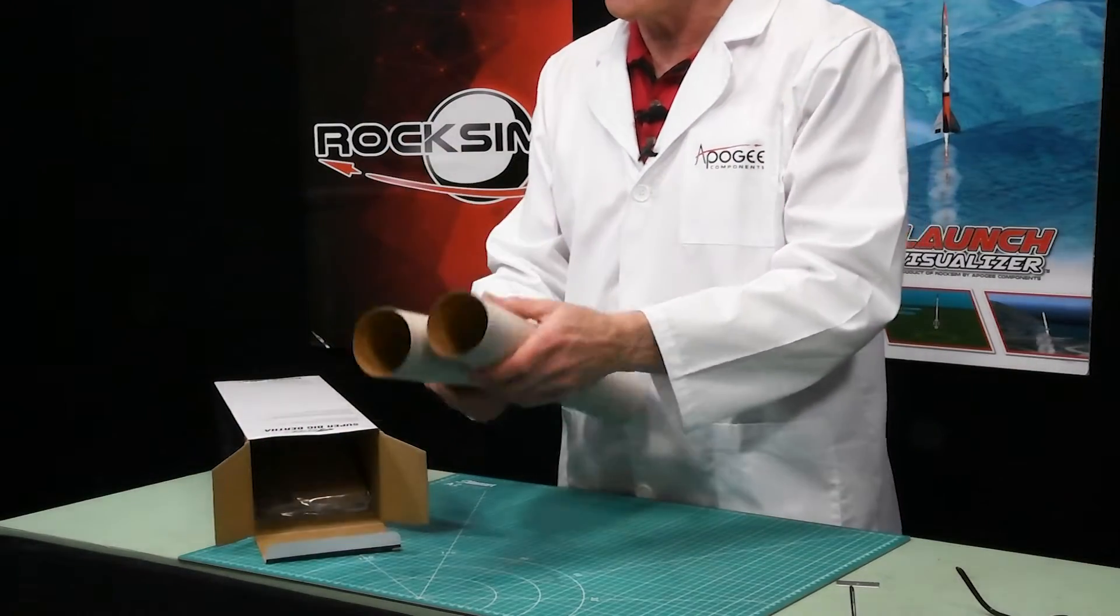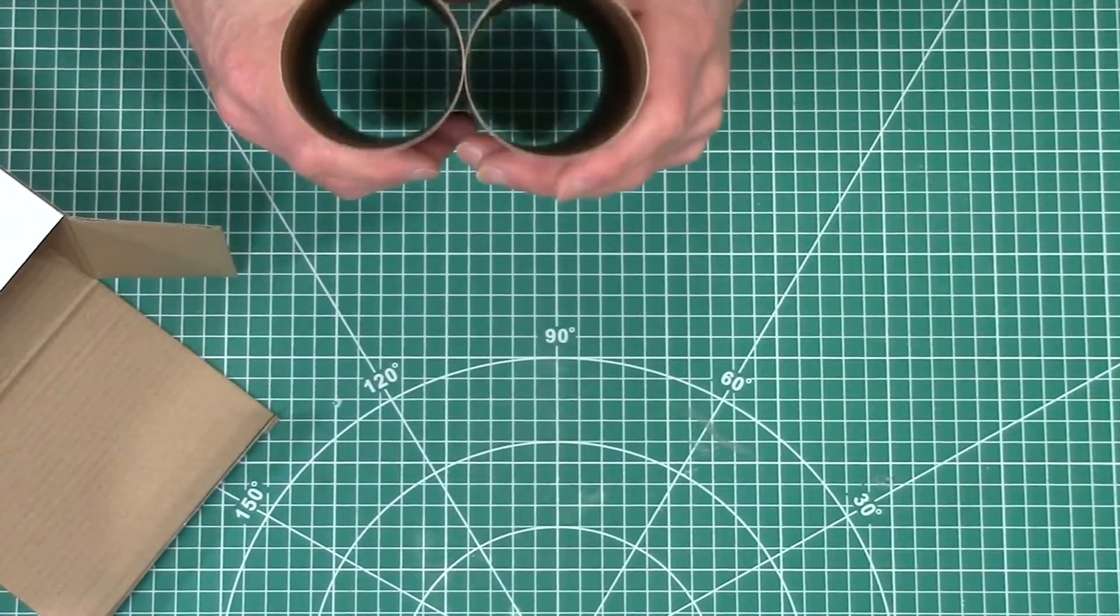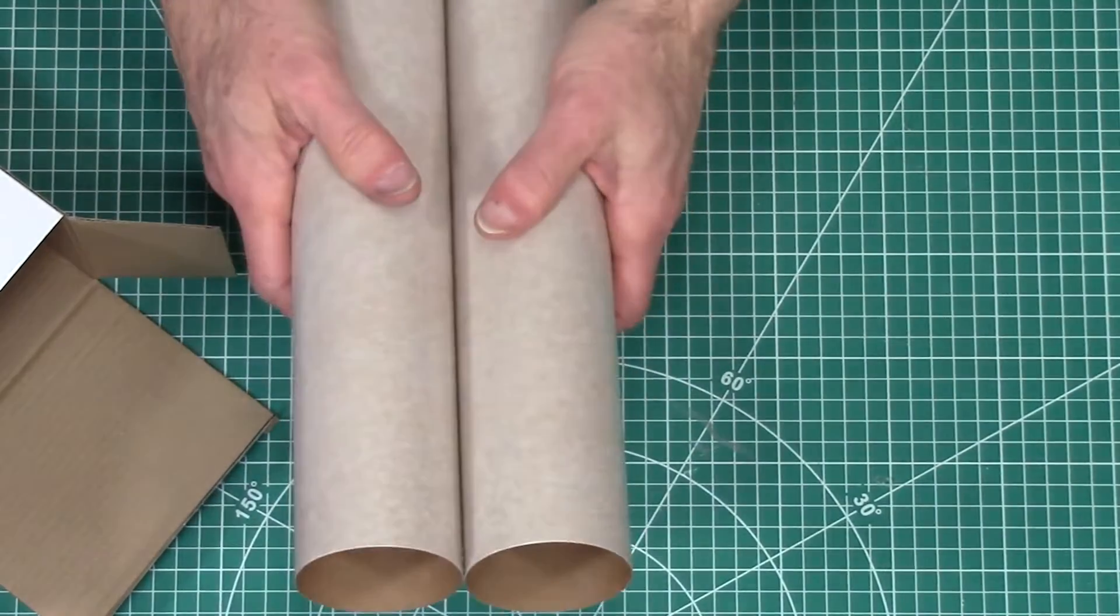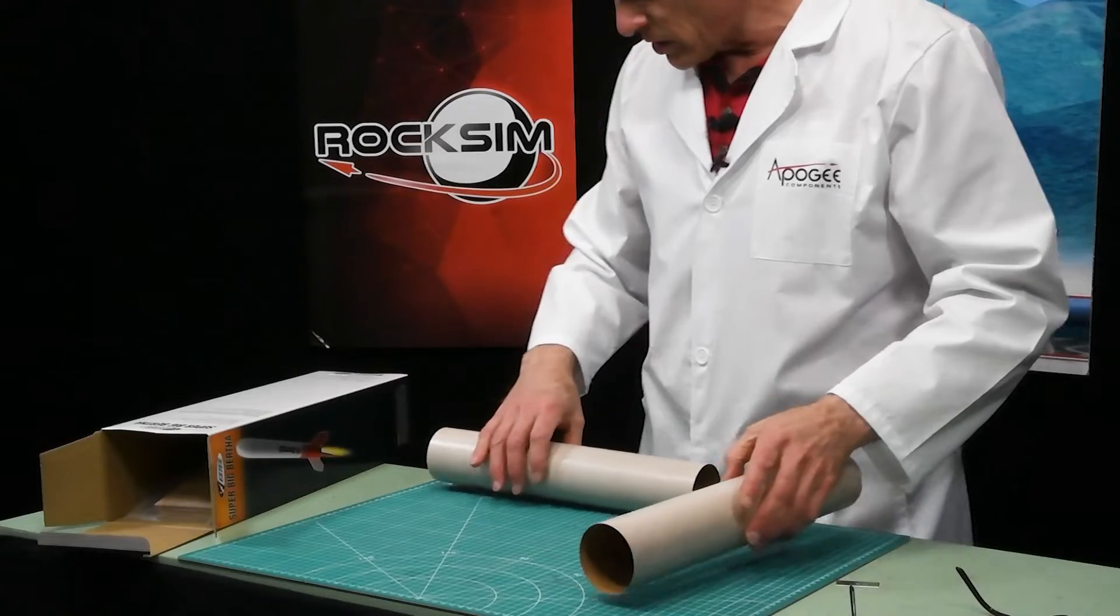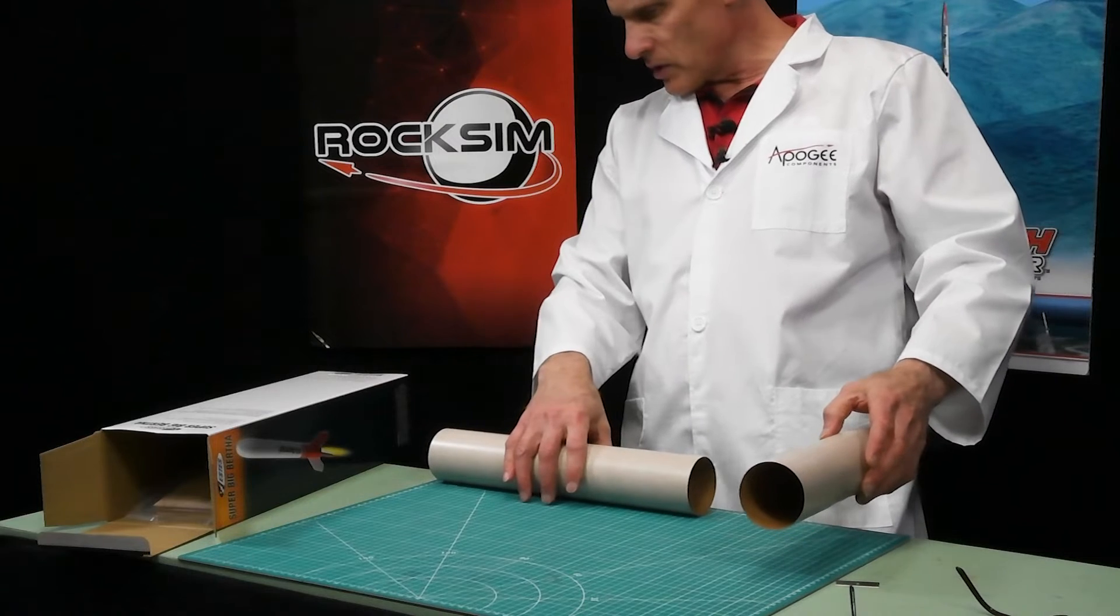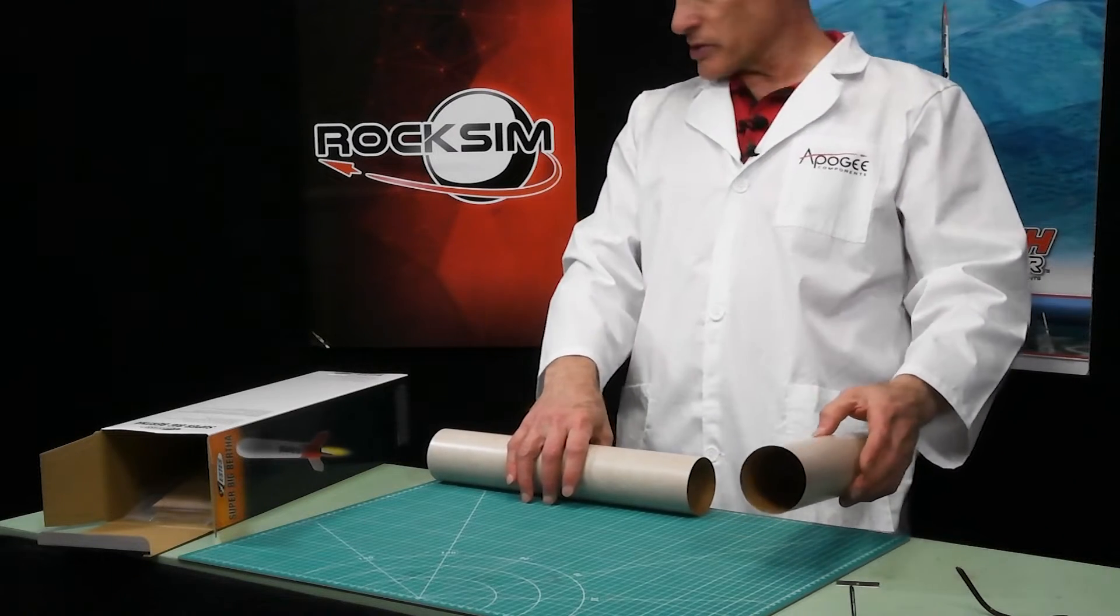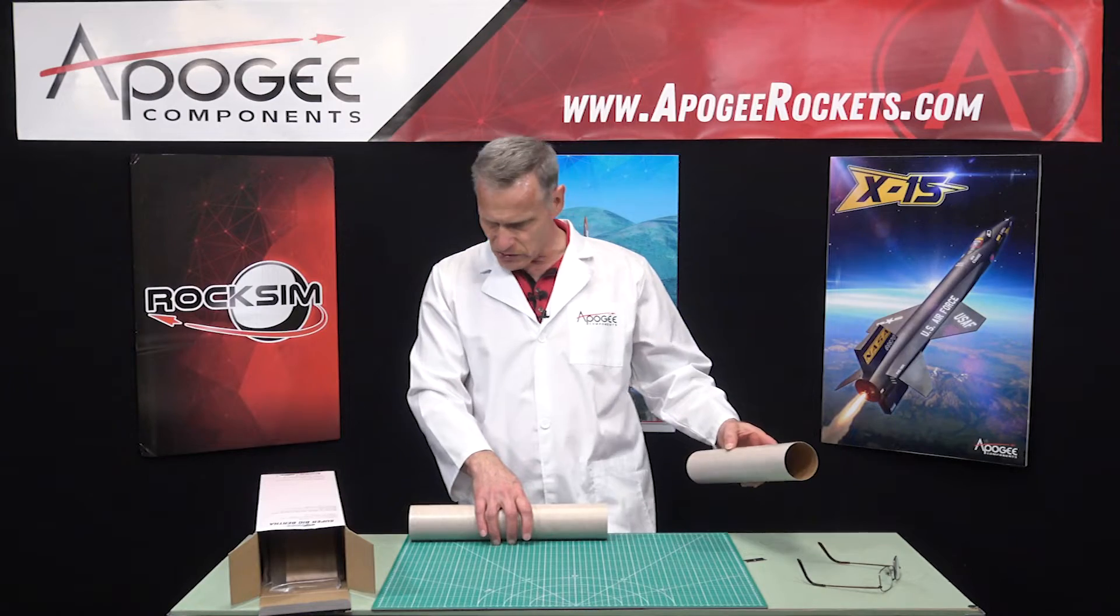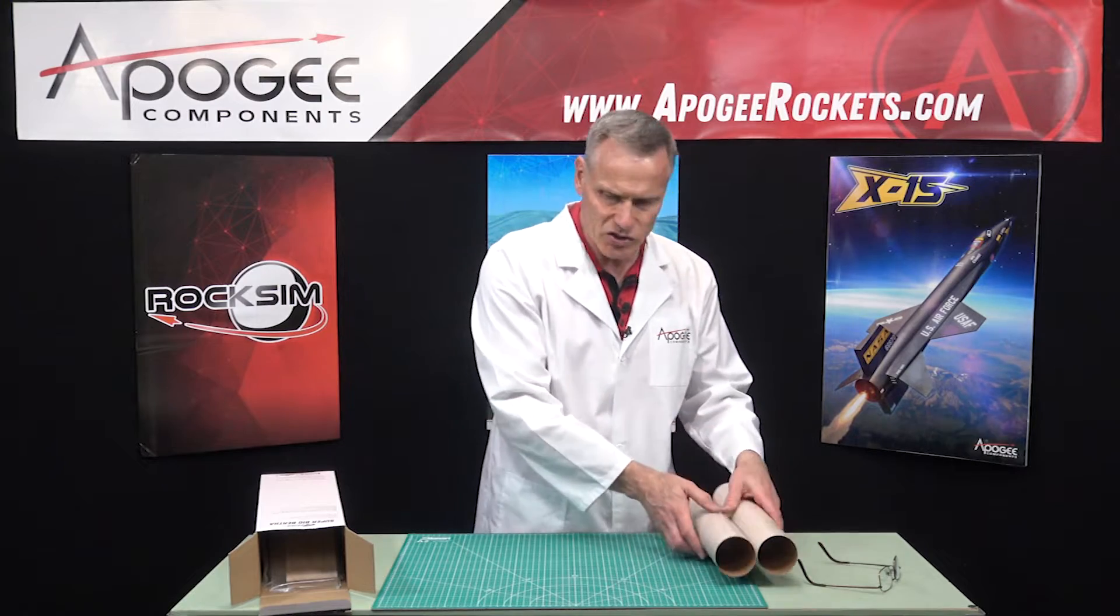So when we open it up, the first thing we see are two tubes, and these are BT-80 size. And I'm just trying to get how long they are. They're not 18 inches. They're 36 centimeters. So like 14 or 15 inches long.